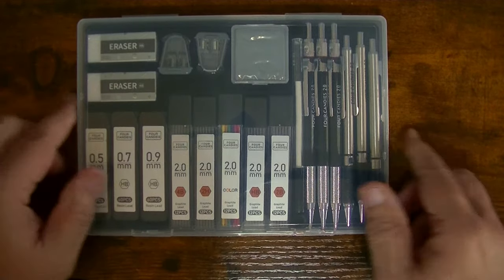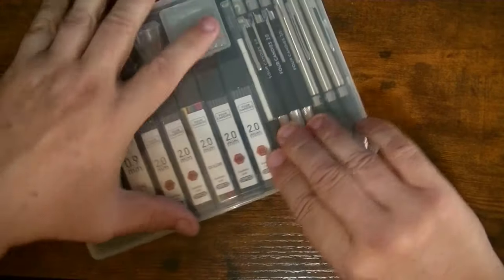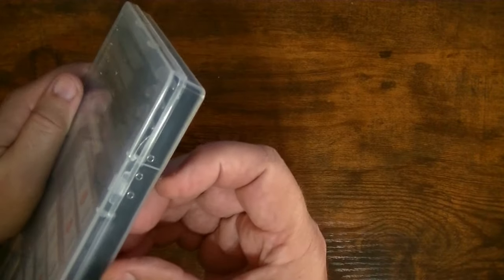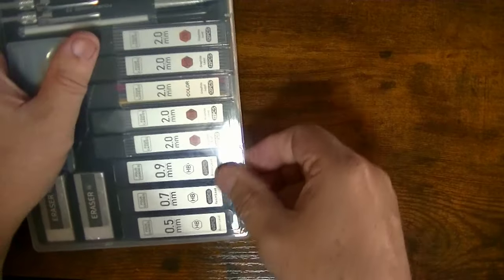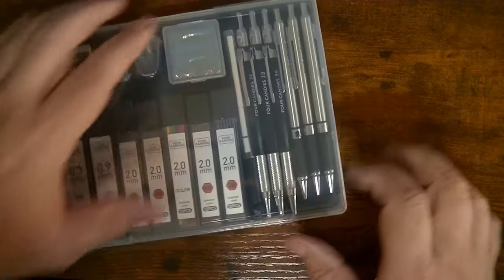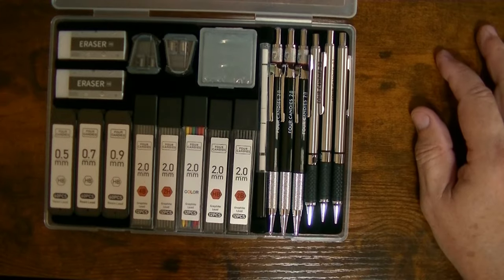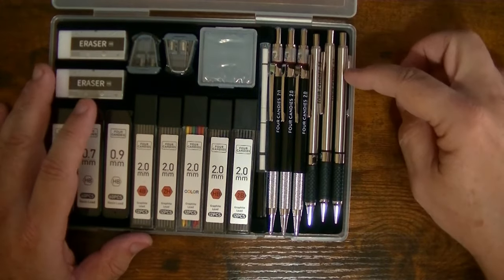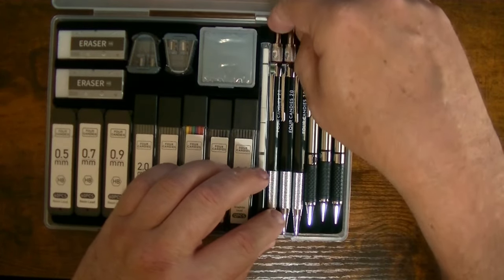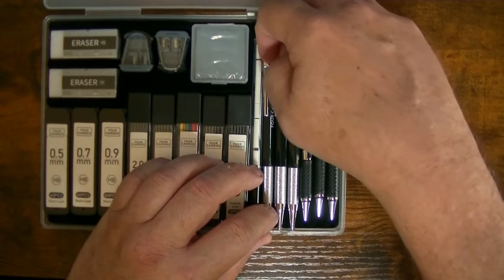Now it comes in this plastic case. You have a couple of latches down here that you've got to just kind of pull up on it. And there you go. Now take a look at this thing. It has six mechanical pencils. And we're going to go check these out real quick here.